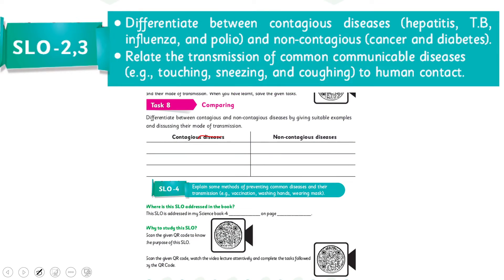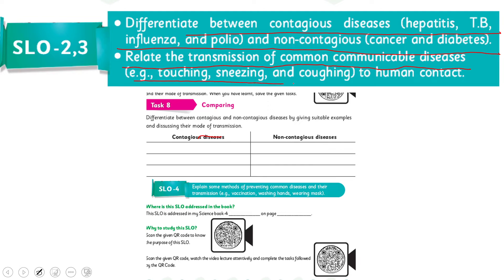My dear students, according to these SLOs, students will be able to differentiate between contagious diseases like hepatitis, TB, influenza, and polio, and non-contagious diseases like cancer and diabetes. They will also be able to relate the transmission of common communicable diseases like touching, sneezing, and coughing to human contact.